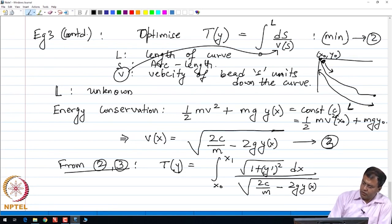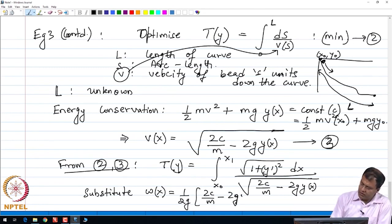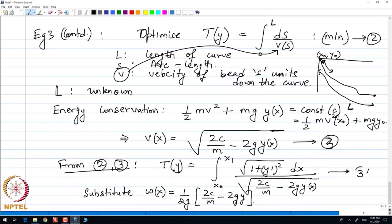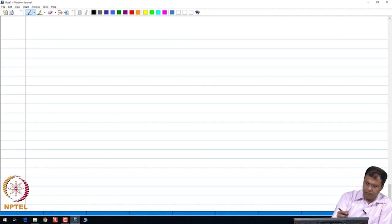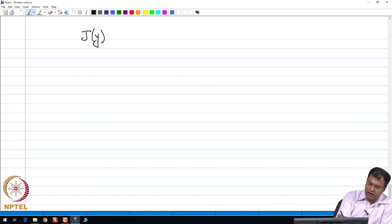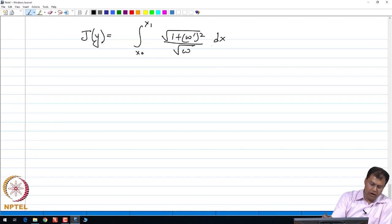This particular integrand is quite complicated, so we do a little bit of simplification. We substitute the following variable: let us assume that the variable W of X is the following quantity, 1 by 2G times 2C by M minus 2G Y. When we write this, let me call this as 3 prime, we rewrite 3 prime in terms of this variable W of X. When we do that, we get the following functional: integral from X0 to X1, 1 plus square root of 1 plus W prime square divided by square root of W dX.